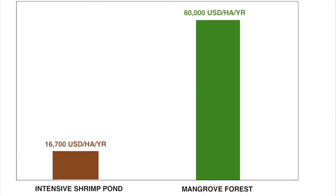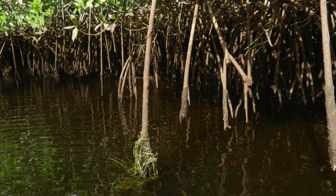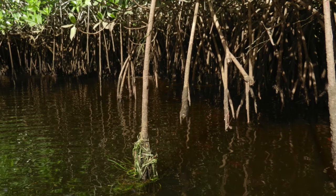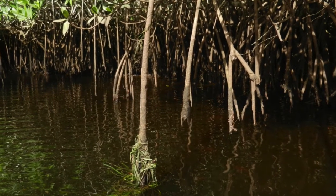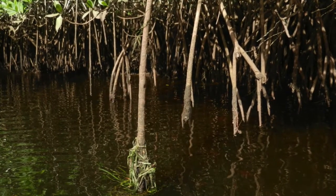Compare this to an intensive shrimp pond valued at $16,700 US dollars per hectare per year. However, we must keep in mind that selling shrimp is money in the pocket, critical to rural farmers, while value generated by mangroves is harder to price, with benefits that are harder to see playing out in the long run.